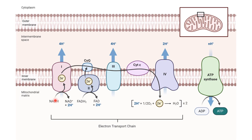As NADH is oxidized, the electrons are carried by iron proteins in complex number 1 and eventually, together with the hydrogen proton, they will be expelled into the intermembrane space. So as NADH is oxidized, 4 hydrogen atoms enter the intermembrane space, making it more positive and the mitochondrial matrix more negative, and making the intermembrane space more acidic because of the higher presence of protons.